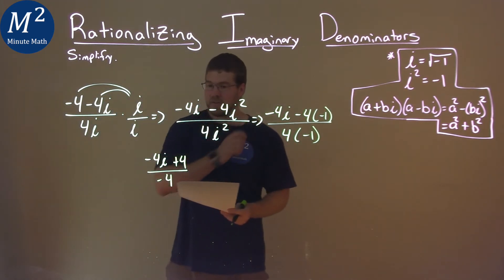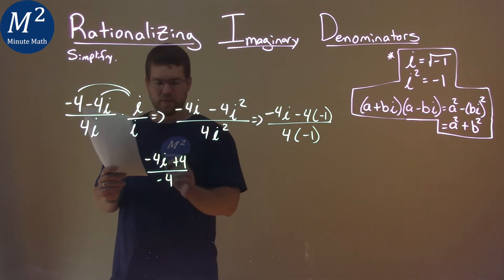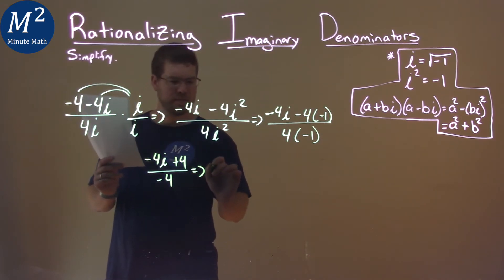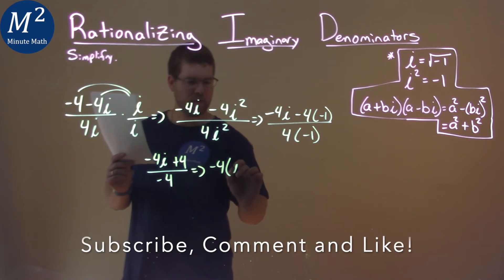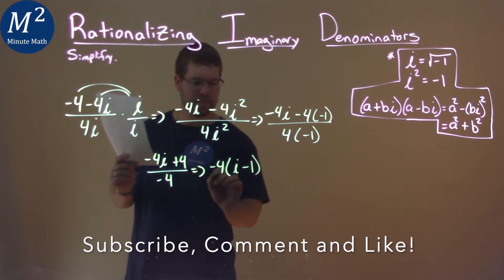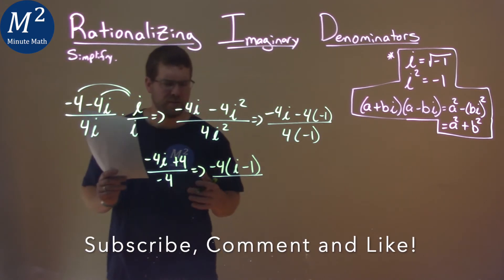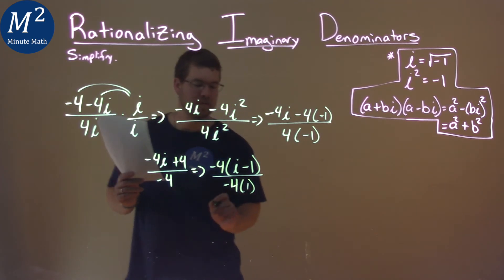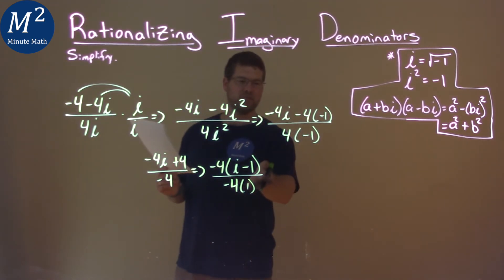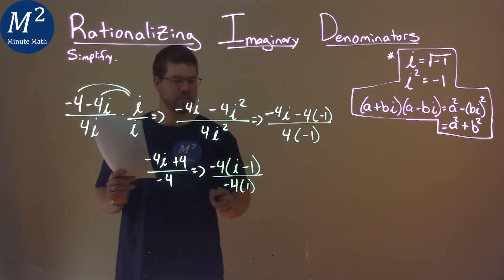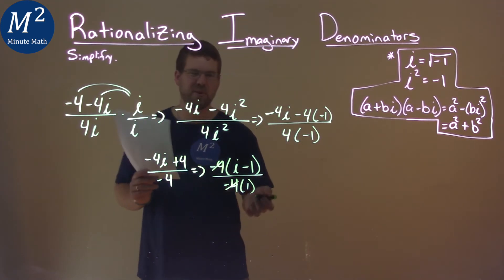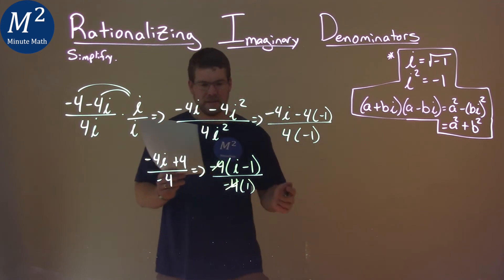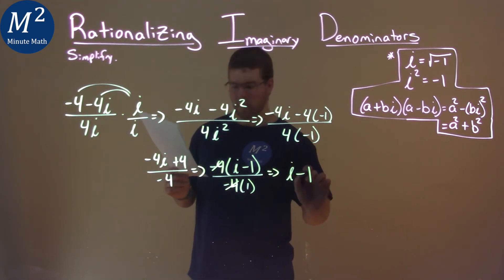Well, luckily for us, we can pull out a negative 4 from the numerator and denominator. Negative 4 comes out, and we're left with i minus 1. Denominator, how do we pull out negative 4? You can just do it like this. Negative 4 times 1. Negative 4s cancel. We don't need to write divided by 1. So we can rewrite this to be i minus 1.